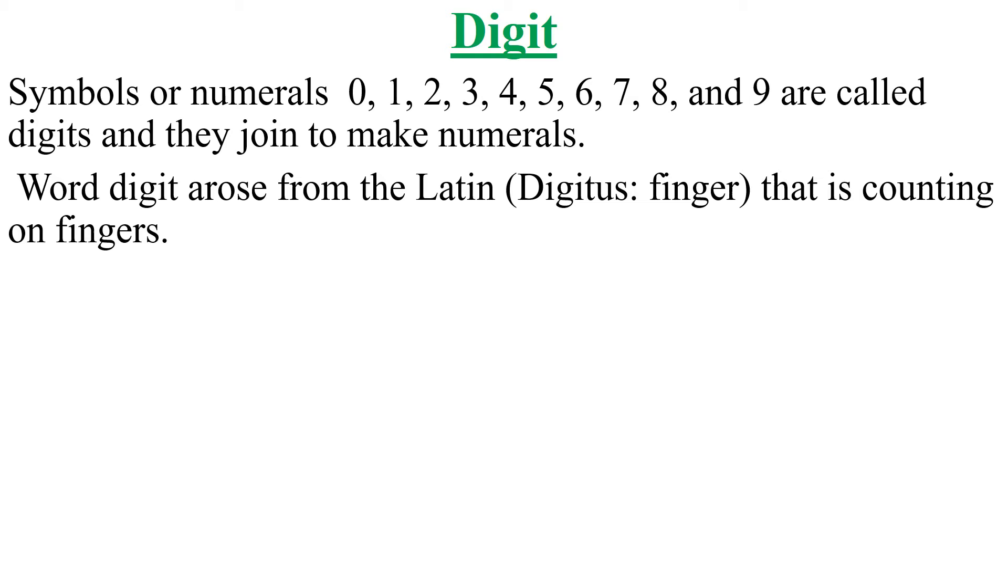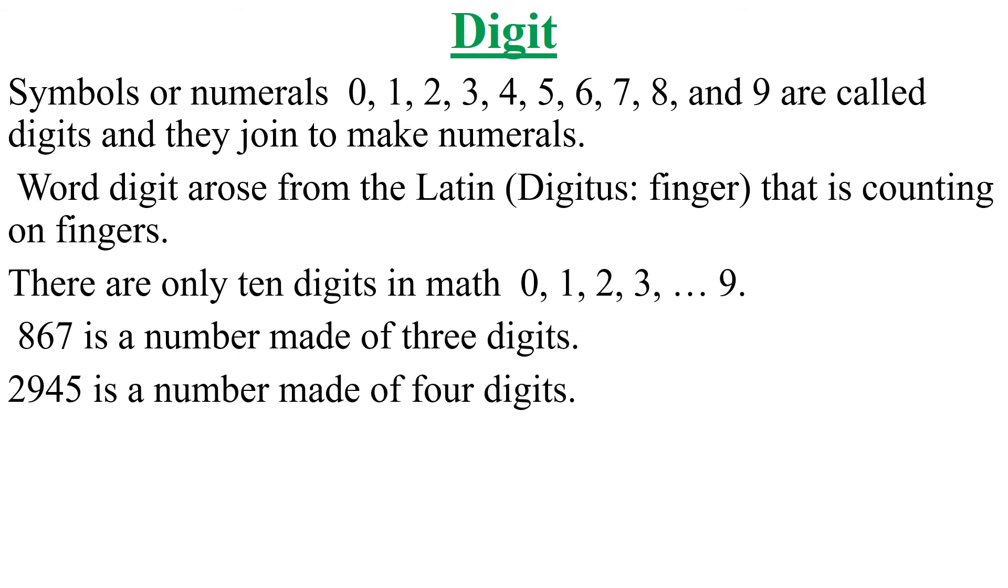The word digit arose from the Latin digitus, which means finger, that is counting on fingers. Since we have 10 fingers, so on this basis there are 10 digits: 0, 1, 2, 3, 4, 5, 6, 7, 8, and 9. There are only 10 digits in math as I have just said.